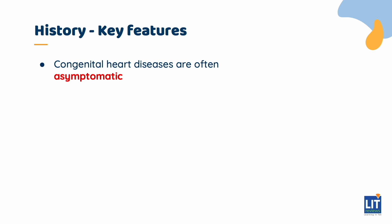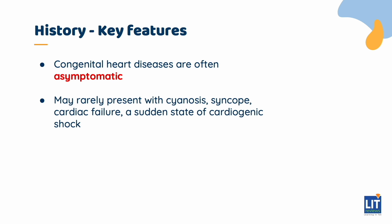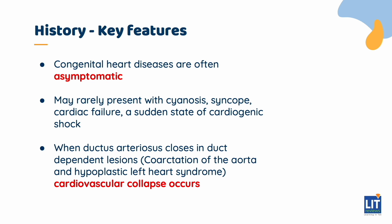Congenital heart diseases that cause murmurs are often asymptomatic, though they may rarely present with cyanosis, syncope, cardiac failure, or a sudden state of cardiogenic shock. Cardiovascular collapse occurs when the ductus arteriosus closes in duct-dependent lesions, such as in coarctation of the aorta and hypoplastic left heart syndrome.